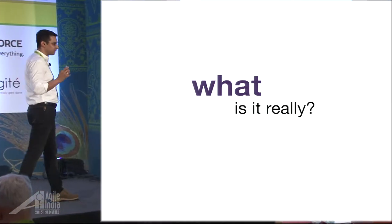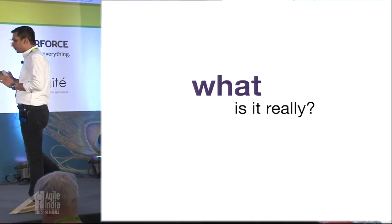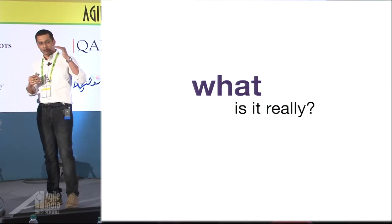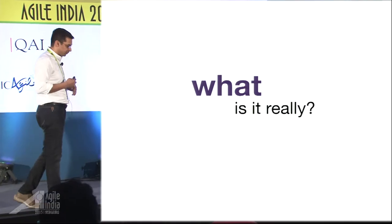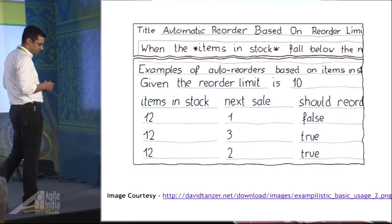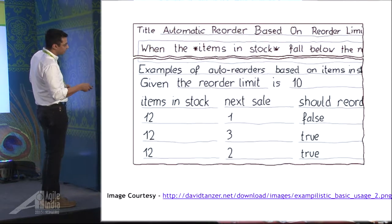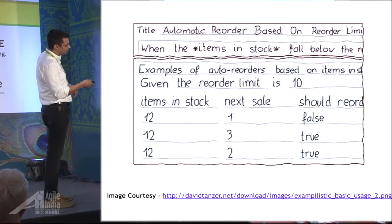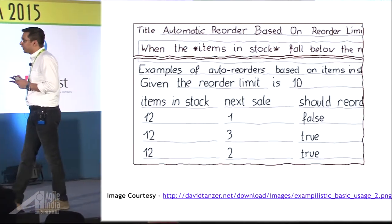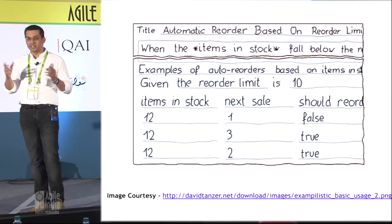We've understood why SBE is needed, but what exactly is it? Is it any kind of magic process? Certainly not. It's a very well-defined process with a detailed set of steps, where each step has a very specific role and performs a validation while defining the specifications. Here is an example: the top of the story is about when to reorder inventory. The left-hand side inputs are the pre-conditions, and the right side is the post-condition. If these are my input conditions, this is how my product should behave. Very simple — no ambiguity. The reorder limit is 10; as soon as stock goes below 10, you should reorder.